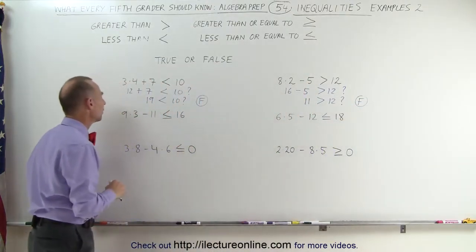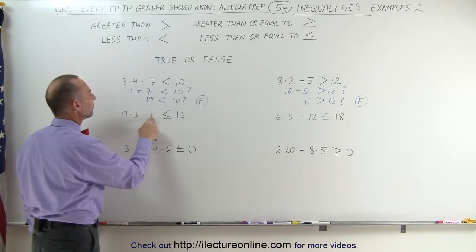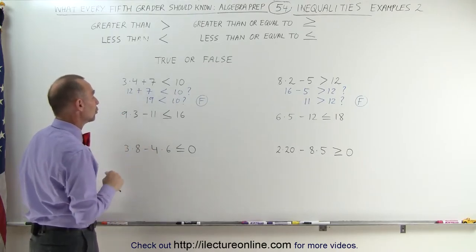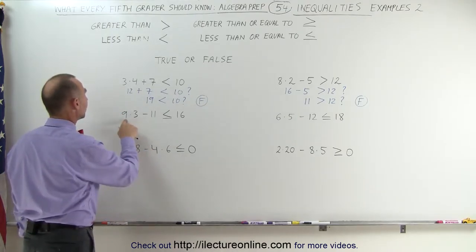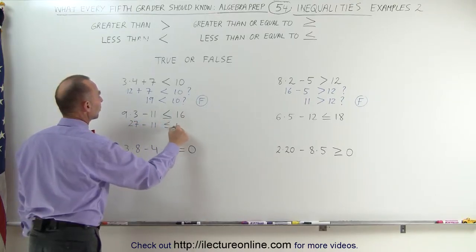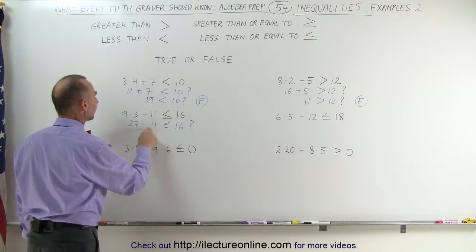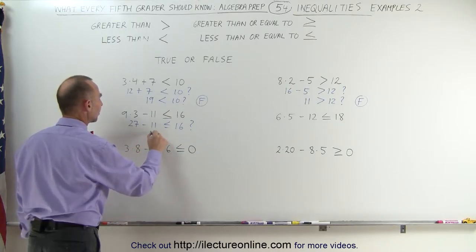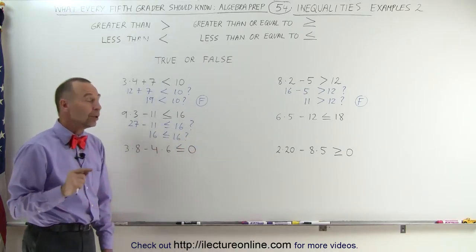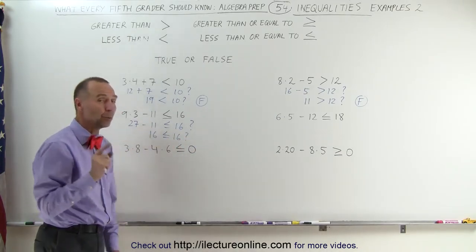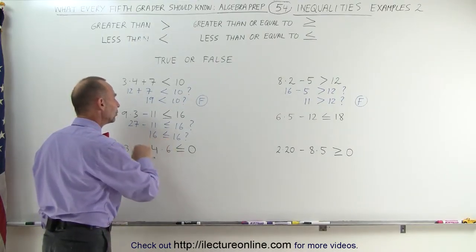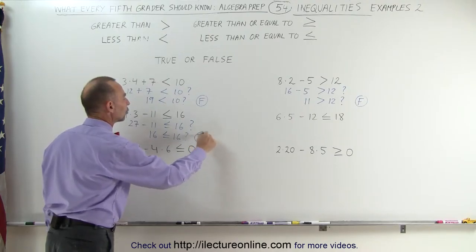Coming over here, we have 9 times 3 minus 11. Is that less than or equal to 16? It only needs to satisfy one of those two conditions. Let's multiply this out: 9 times 3 is 27, minus 11 — less than or equal to 16? Let's subtract 11 from 27; that is 16. Is 16 less than or equal to 16? We know that 16 is not less than 16, but we know that 16 is equal to 16. So it satisfies the second condition — equal to. Therefore, this is a true statement.